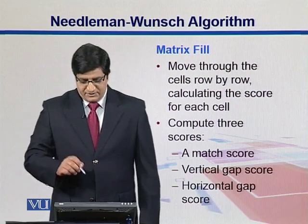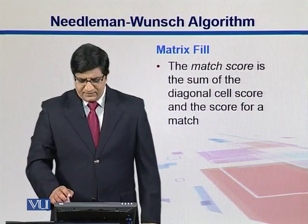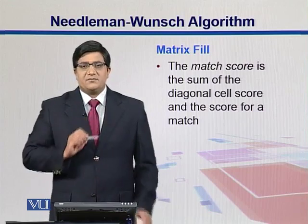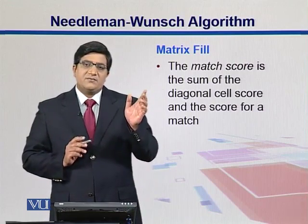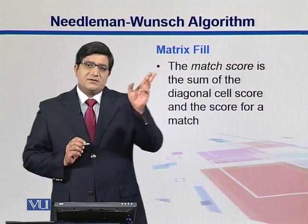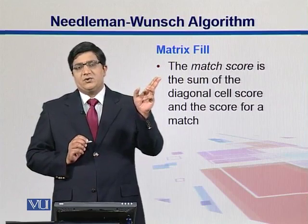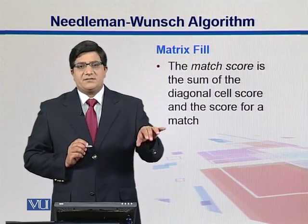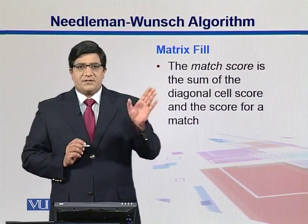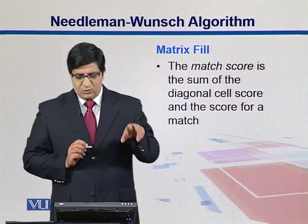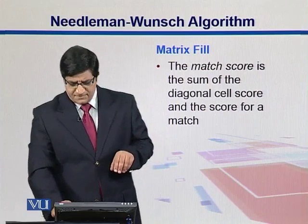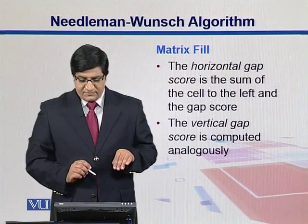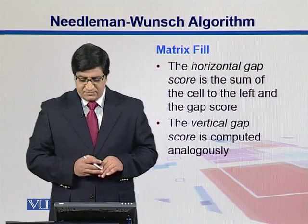The match score is the sum of the diagonal cell score and the score for the match or mismatch. Moving from the previous row and column, that is cell (i-1, j-1), gives the diagonal score. The horizontal gap score is the sum of the cell to the left and the gap score. The vertical gap score is computed in a similar way.